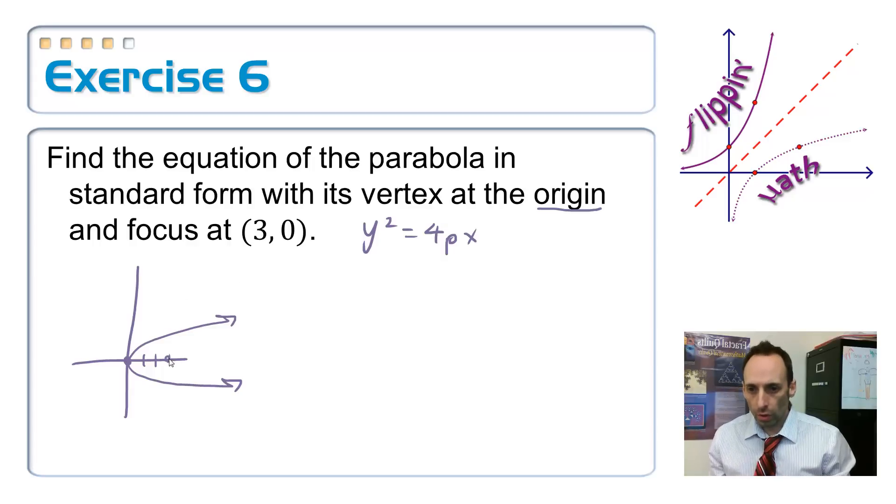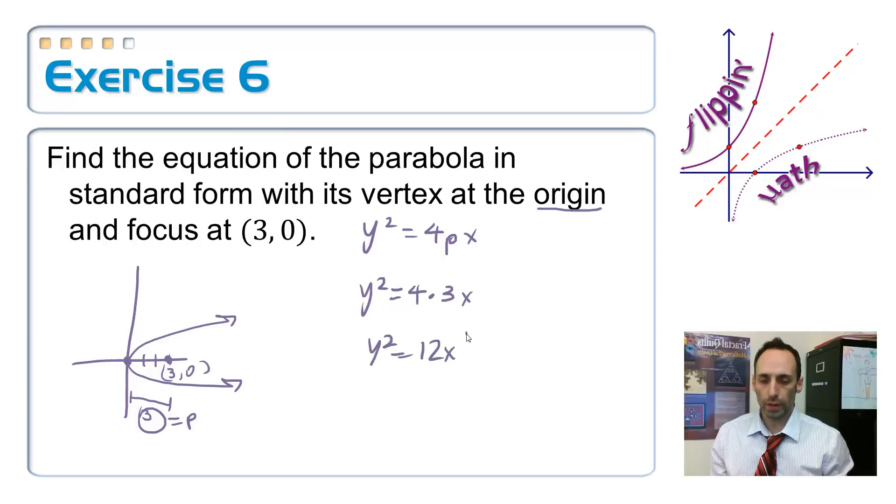So, I'm going to use this coordinate here at 3, 0 to find my p. Well, p, focal length, this is the distance from the vertex to the focus. So, how big is this from here to here? I think it's 3. So, I'm going to take my 3, set that equal to p, put it into this equation, y squared equals 4 times 3x. y squared equals 12x. And I leave it like that. I don't solve it for x or whatever, I just leave it like that. That's the equation in standard form when we're talking about conic sections.